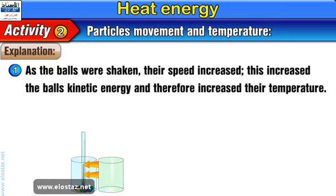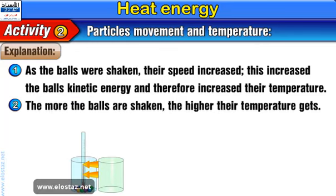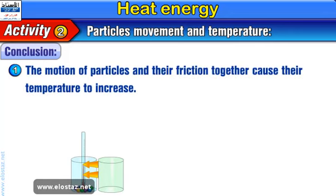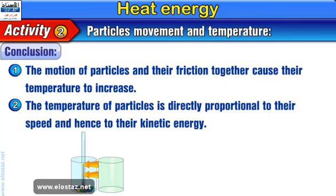Explanation: As the balls were shaken, their speed increased. This increased the balls' kinetic energy, and therefore increased their temperature. The more the balls are shaken, the higher their temperature gets. Conclusion: The motion of particles and their friction together cause their temperature to increase. The temperature of particles is directly proportional to their speed, and hence to their kinetic energy.